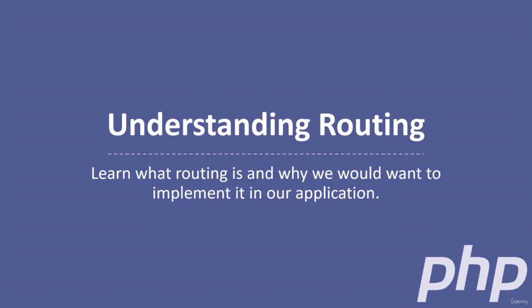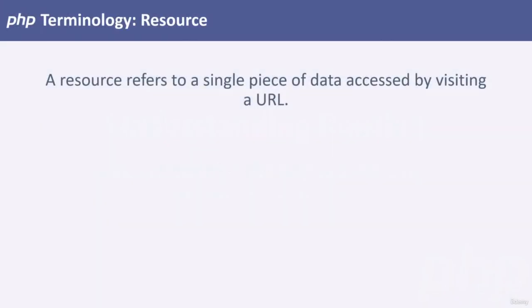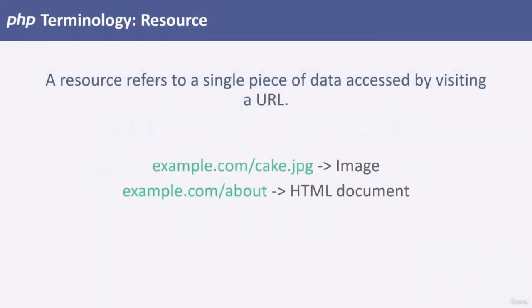You're going to hear these words often. First, we should understand the idea of a resource. In the context of web development, a resource refers to a single piece of data delivered by a server. For example, if we request a file called cake.jpg, the resource would be an image. If we requested a page called about, the resource would be an HTML document. A resource merely refers to the file loaded in our browsers.